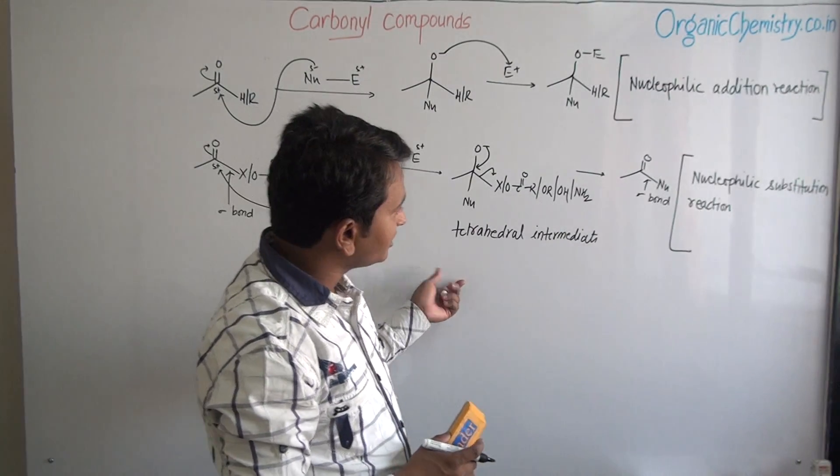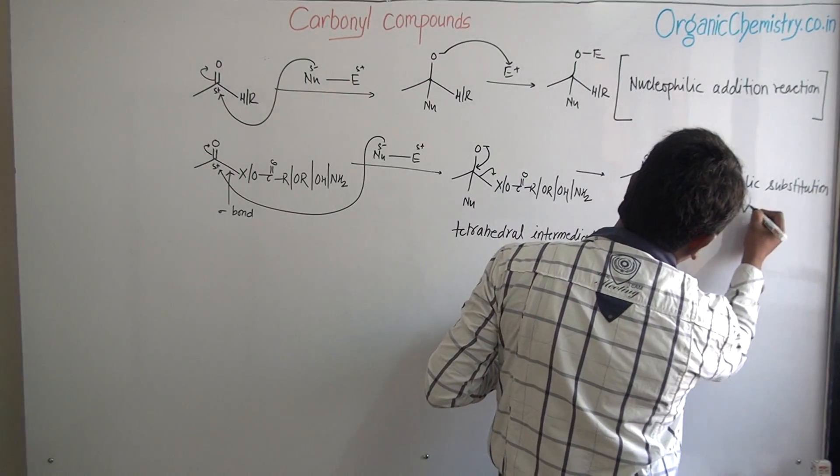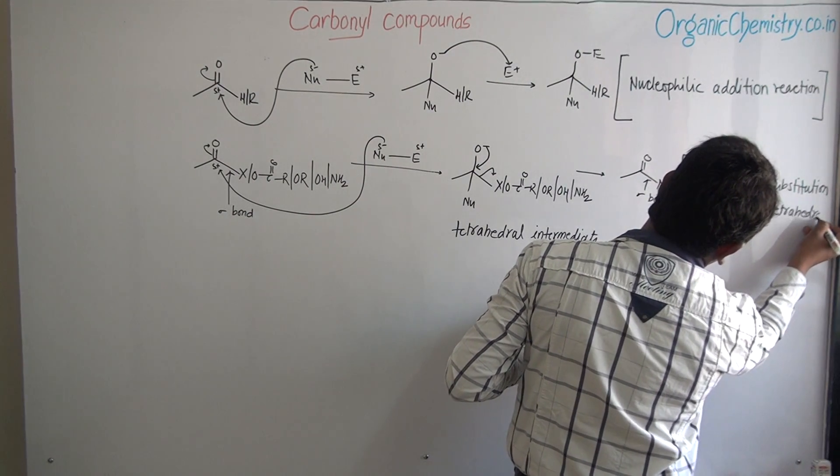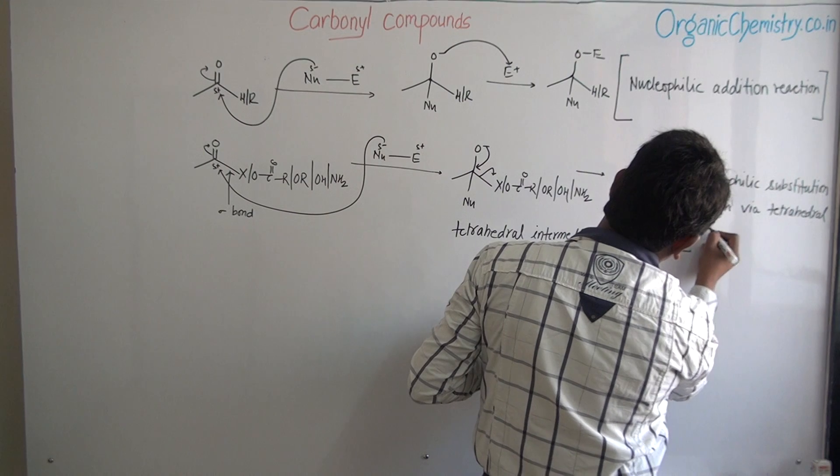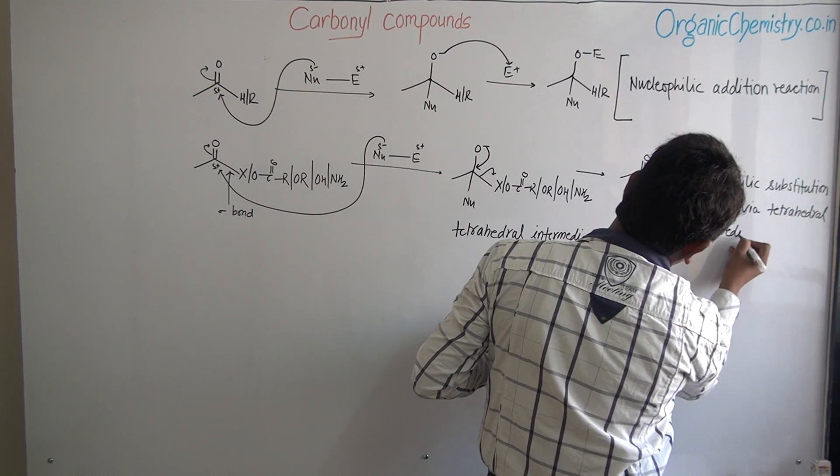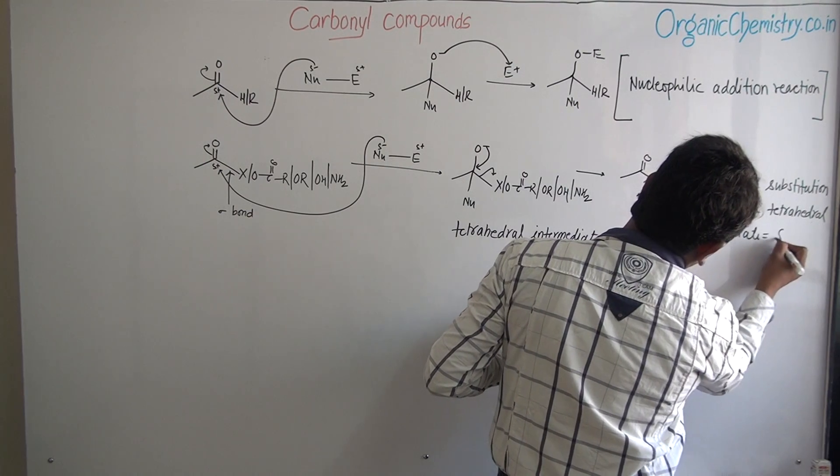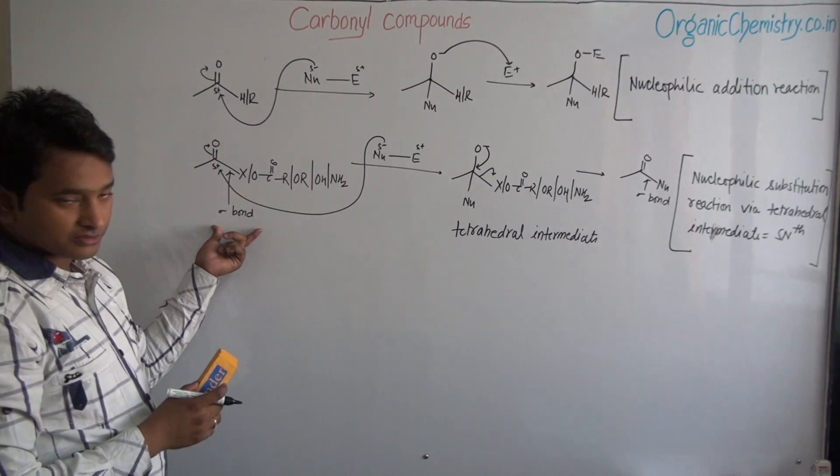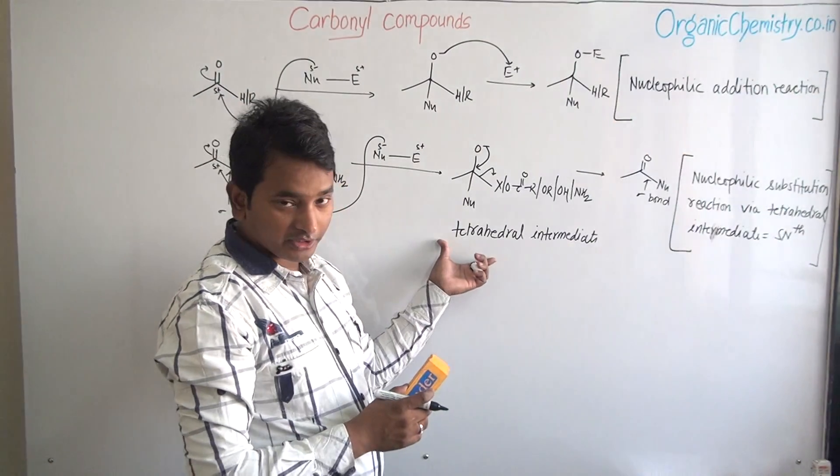But this is different from SN1, SN2, SNi. So new concept is given: nucleophilic substitution reaction via tetrahedral intermediate, which is also called as SNth. So reaction is nucleophilic substitution via tetrahedral intermediate.